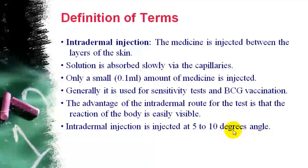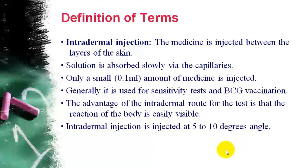The intradermal injection is injected at a 5 to 10 degree angle — a very small angle. The needle is placed almost parallel to the skin, lifted slightly to pass just under the skin surface.